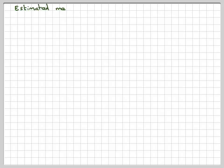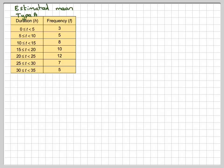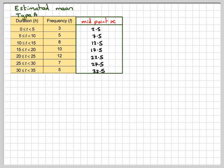Estimated mean for Type A: we're going to need to find the midpoint of each of these points. So that will be 2.5, 7.5, 12.5, 17.5, 22.5, 27.5, and 32.5.